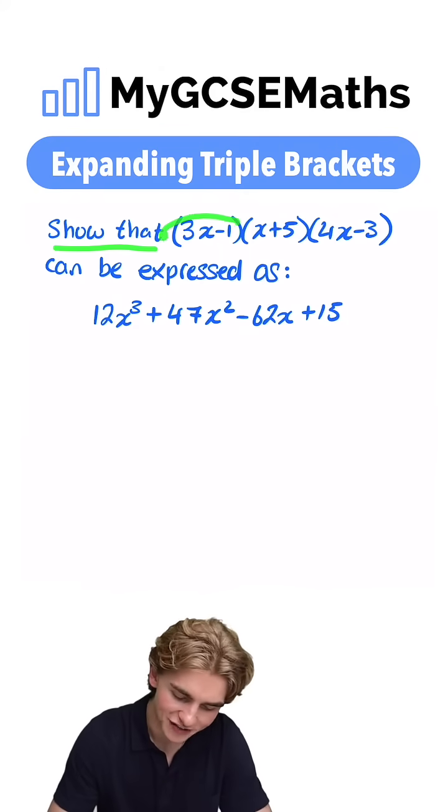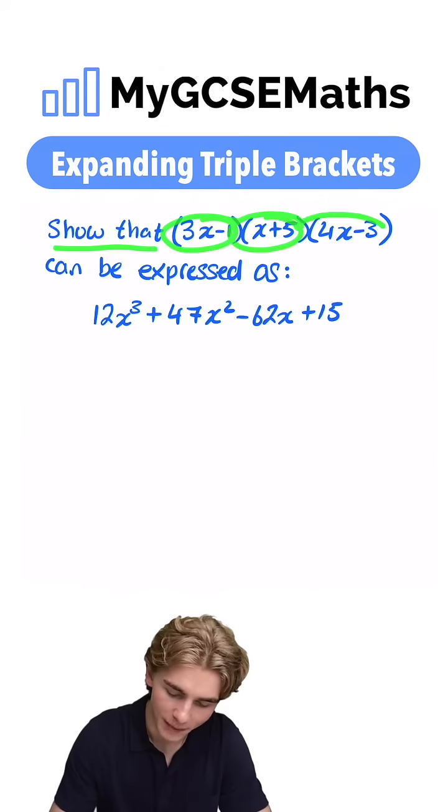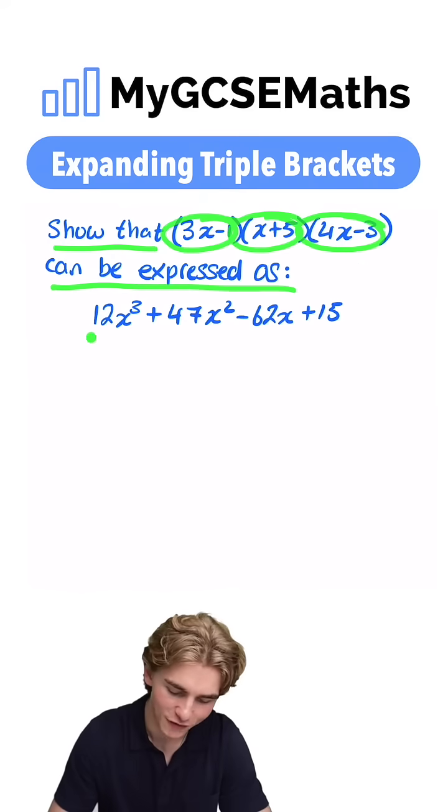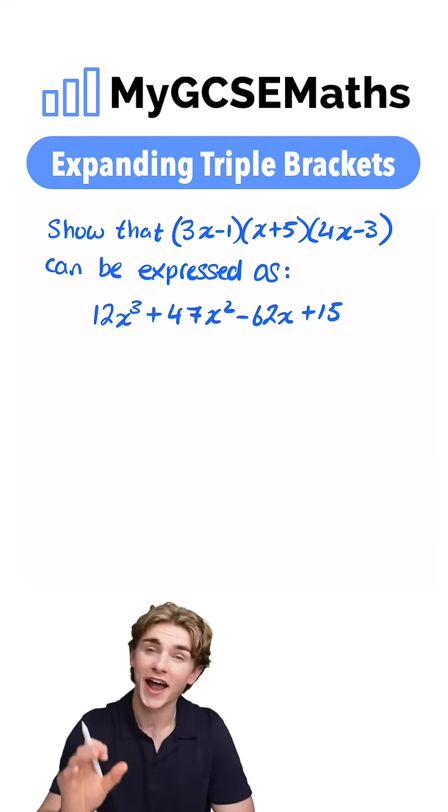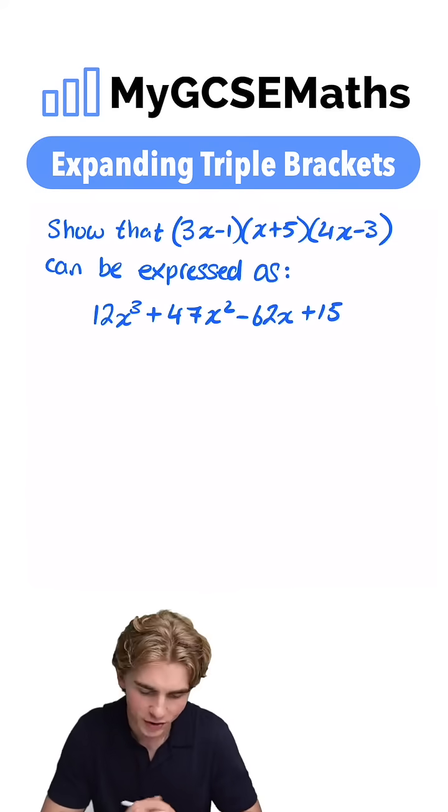It says show that 3x minus 1 multiplied by x plus 5 multiplied by 4x minus 3 can be expressed as 12x cubed plus 47x squared minus 62x plus 15. We're gonna have to expand those brackets avoiding any silly mistakes.